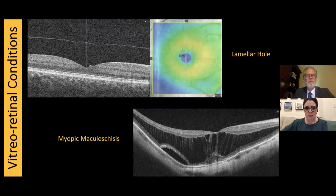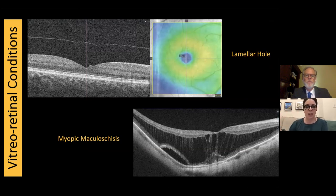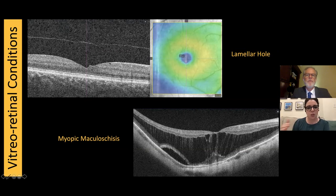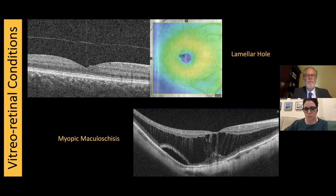Lamellar holes are related to full thickness macular holes — when the PVD occurs and is on its way to being a full thickness macular hole but the process is aborted, you end up with just an abnormal inner retinal surface. It looks like a chunk was eaten out of the retina. They vary in presentation — sometimes a little ascesis or cystic spaces — but looking at the outer retina and the four bright bands, we shouldn't have any change in vision from a lamellar hole because the outer retina is fully intact. It's something to monitor but we don't expect it to be visually significant.